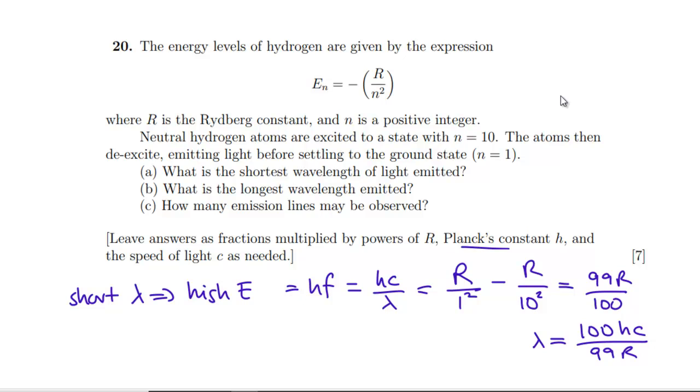So the longest wavelength is then going to be if we've just dropped down from 10 to 9. So in this case, long wavelength implies low E, which means our HC over lambda is going to be R over 9 squared minus R over 10 squared. We'll run out of space in all of this. So what is that going to end up being? Now, we're going to get this over the same thing. So we need to get everything over 8,100.